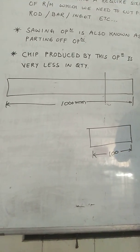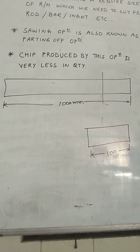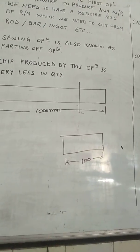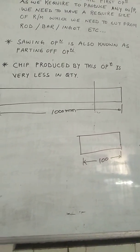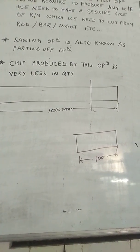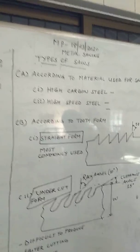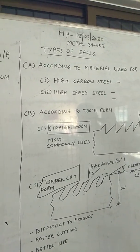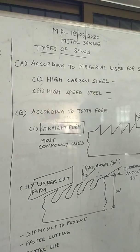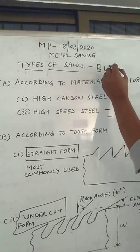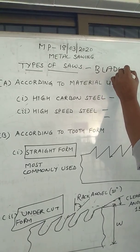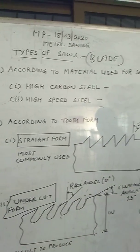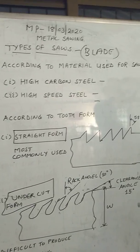Now the machine used to cut this raw material is known as a sawing machine. And to cut that material, the tool used is known as a saw. Now saws or blades are classified according to the material used to manufacture that saw.